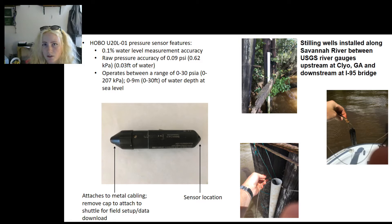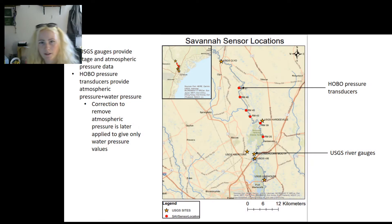Stilling wells are used to shelter the sensors. So far, six HOBA sensors have been deployed along the Savannah River from River Mile 35 to River Mile 51. The USGS gauges provide stage and atmospheric pressure data. HOBA pressure transducers provide atmospheric pressure plus water pressure. A correction is later applied to remove atmospheric pressure so only water pressure values are given.